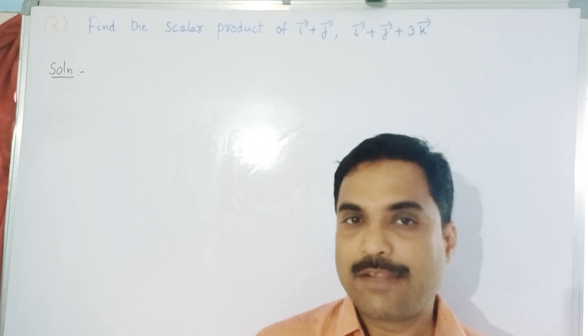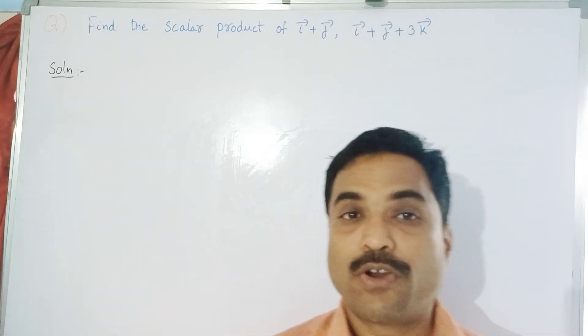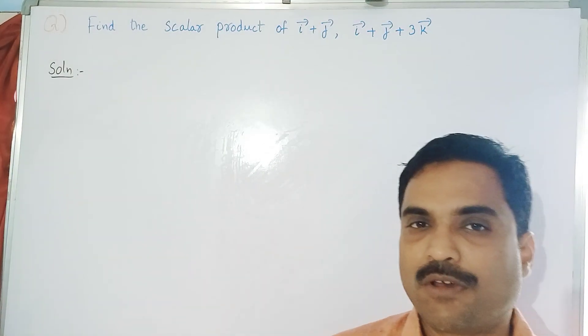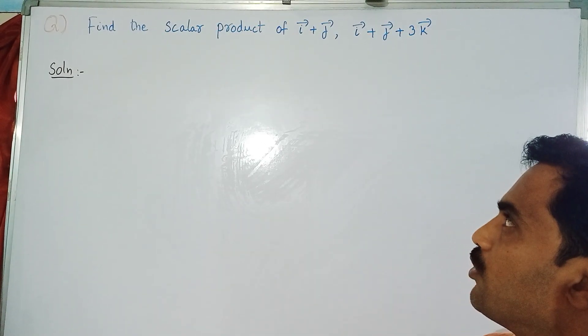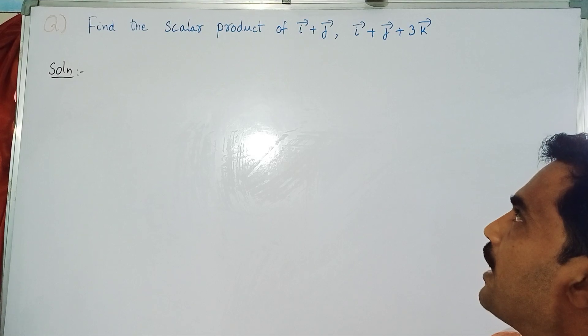Hi, welcome to my channel. I'm Takshisila. In this new video I'm going to solve a mathematical problem under scalar product. The problem is: find the scalar product of i bar plus j bar, and i bar plus j bar plus 3k bar.